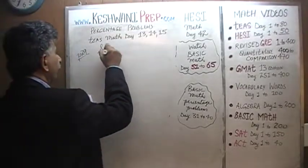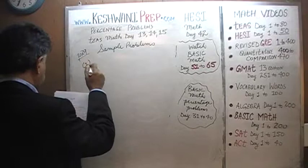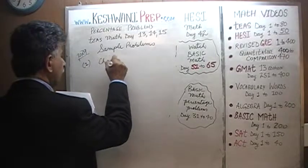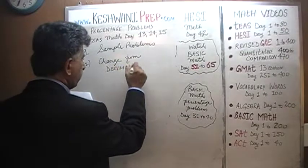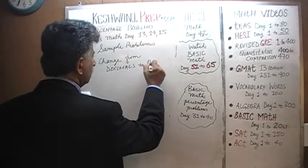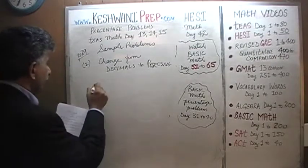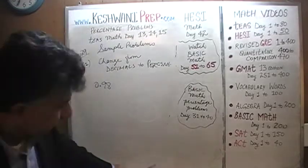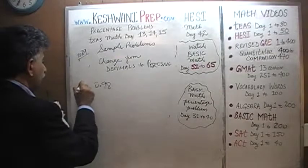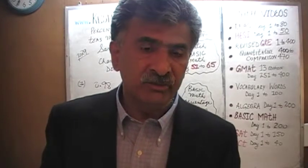Sample problem number one. We are asked to convert from decimals to percent. The very first one they give us is 0.98. I don't want you to memorize anything — that's not how one learns. I want you to understand the concept.